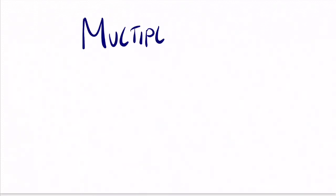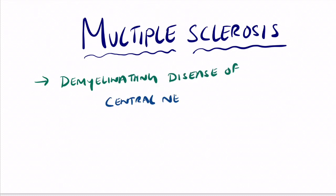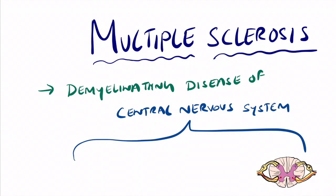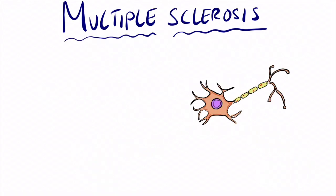What is multiple sclerosis? It is a demyelinating autoimmune condition which usually affects the central nervous system. The central nervous system consists mainly of the spinal cord as well as the brain. The main fundamental thing affected is the neurons, and neurons are connected via a myelin protective sheath which increases conduction speeds.